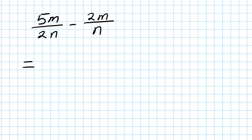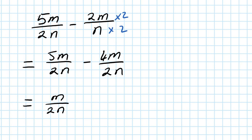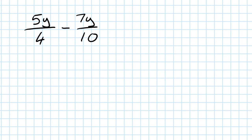Now 5m over 2m minus 2m over n. The denominators are 2m and n, so to make them the same I multiply by 2: the second fraction becomes 4m over 2n. Now the common denominator is 2n. So 5m over 2n minus 4m over 2n: 5m minus 4m is m, and we don't write 1m, just m over 2n.